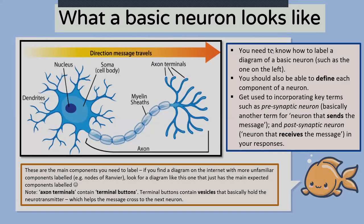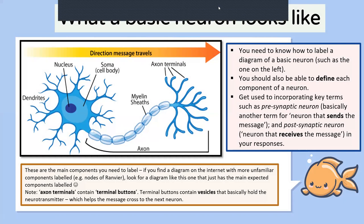That's a quick introduction to what the neuron is — you would all remember this diagram from unit one and two. You need to know all the main key features of the neuron: the dendrites, the myelin sheath, the axon, and the axon terminals. It's really important to know these particular components or key features.